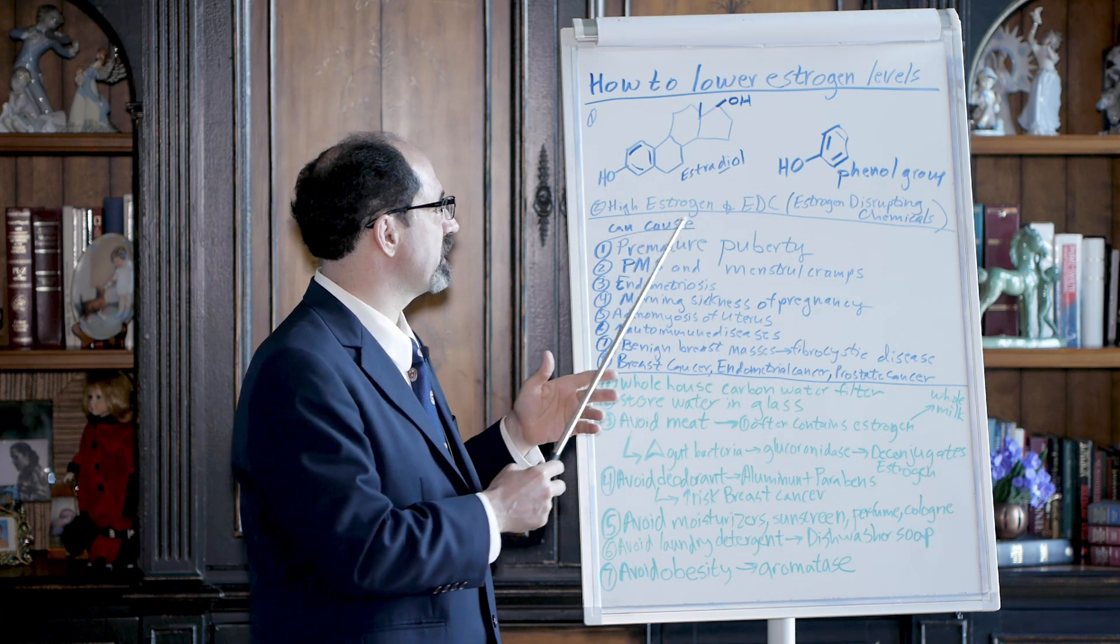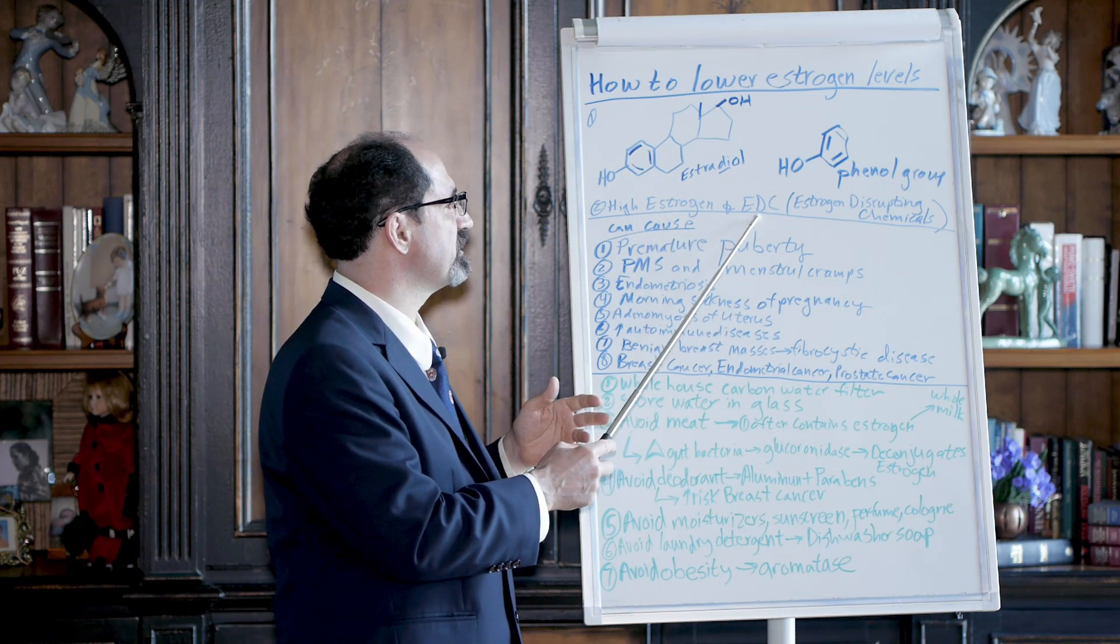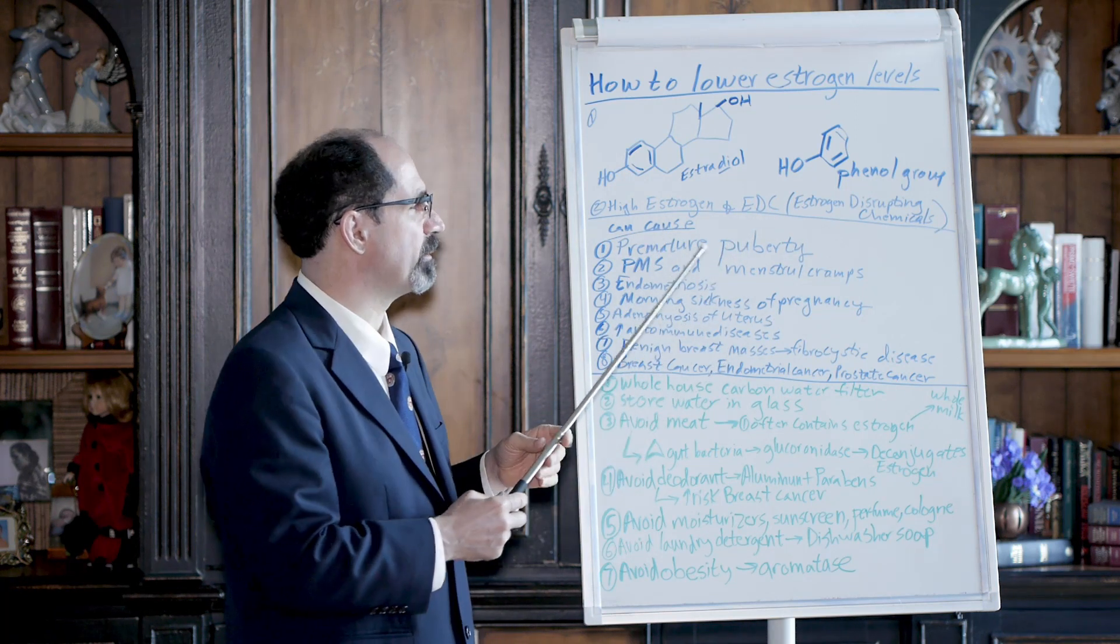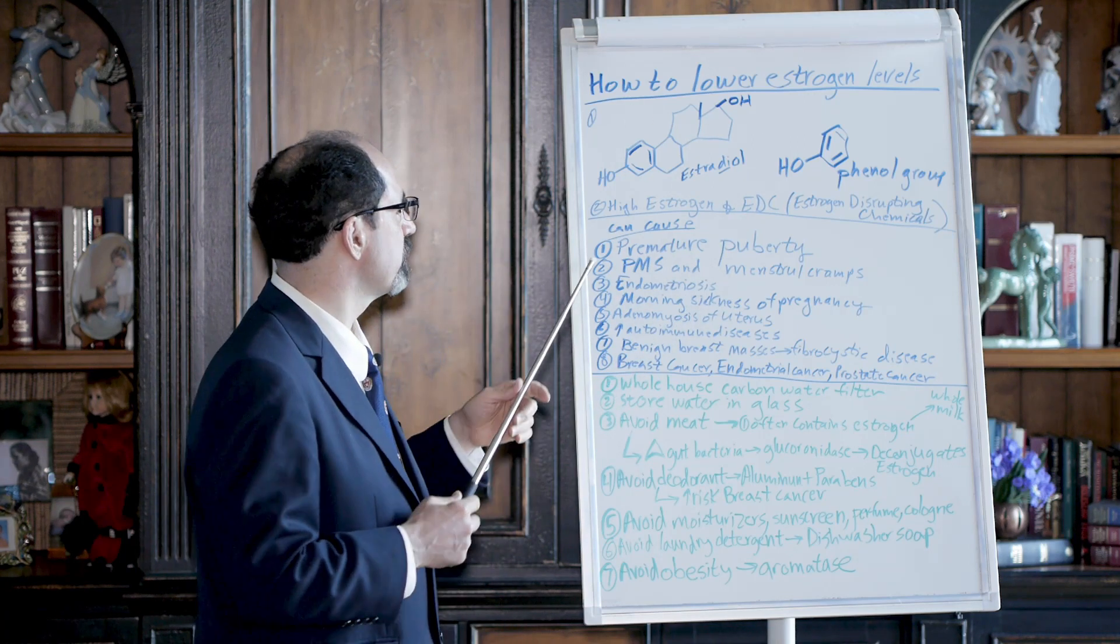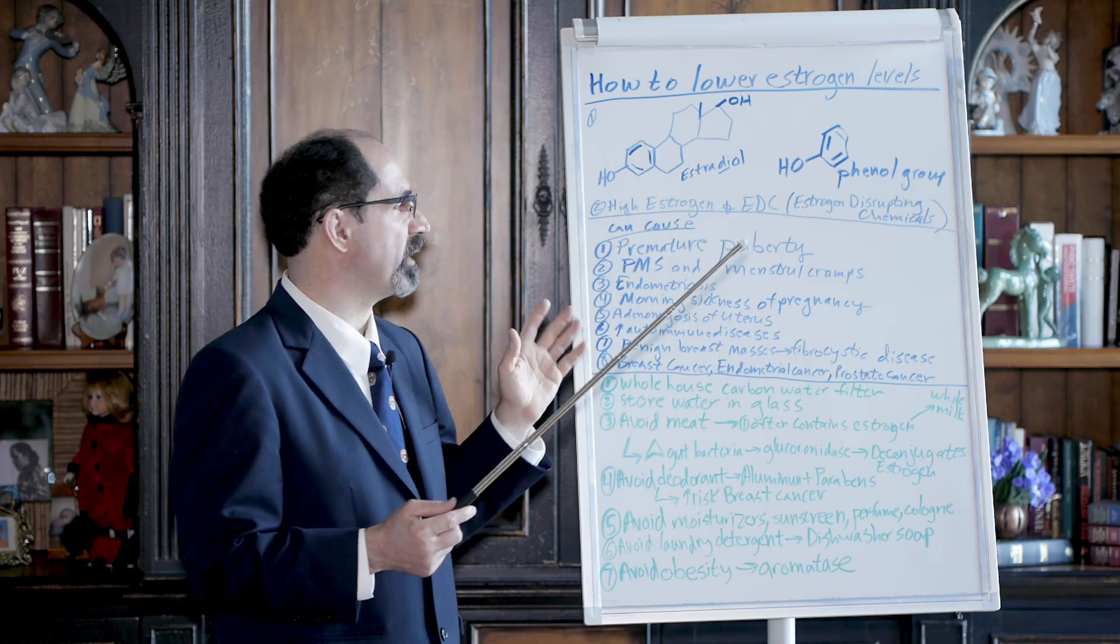What's the big deal about estrogen and estrogen disrupting chemicals? EDCs is the abbreviation for estrogen disrupting chemicals - they'll also use that for endocrine disrupting chemicals. It can cause all kinds of problems.